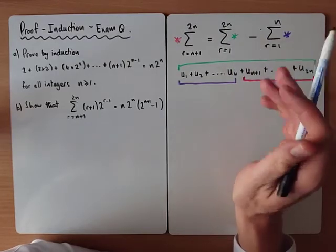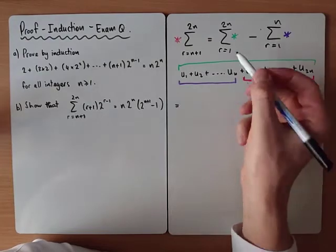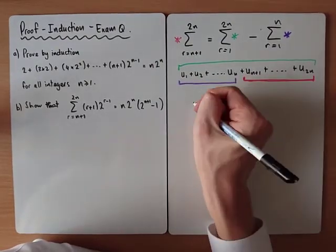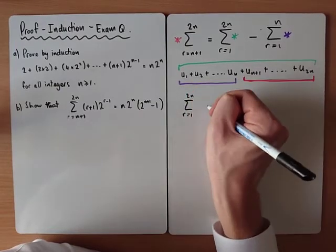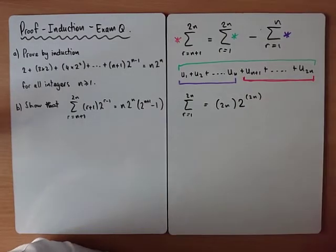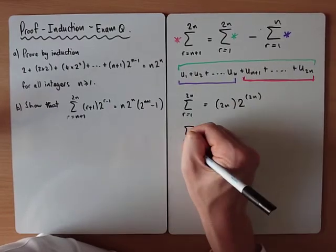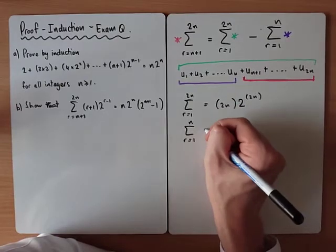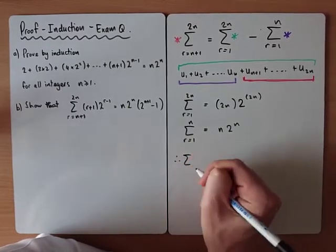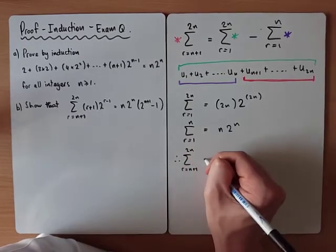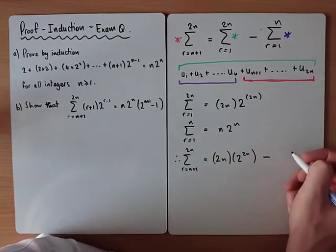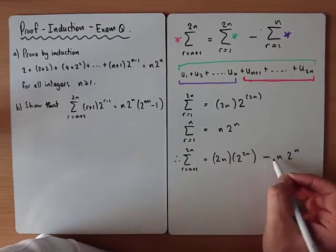Now that we know the strategy, this is actually a quick calculation. The sum from r=1 to 2n, using our result, equals 2n × 2^(2n). The sum from r=1 to n is just n × 2^n. So the sum we want — from n+1 to 2n — is the sum of the 2n terms minus the sum of the n terms.